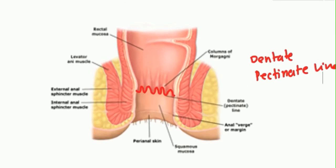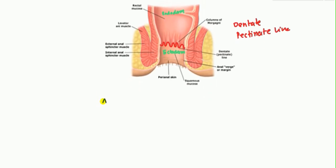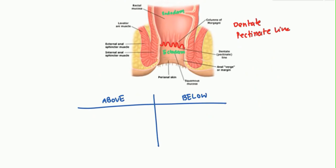Above the pectinate line, you have the endoderm. And below the pectinate line, you have the ectoderm. We'll draw a table to compare and contrast features above and below. Above the pectinate line is derived from the endoderm of the embryological tissue, and below is derived from the ectoderm.